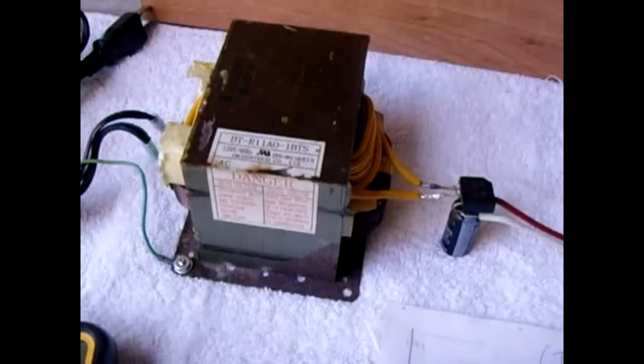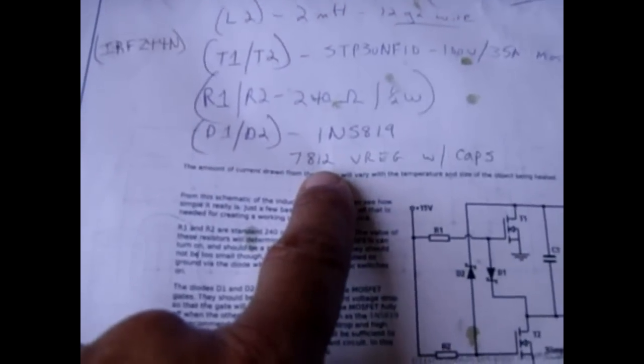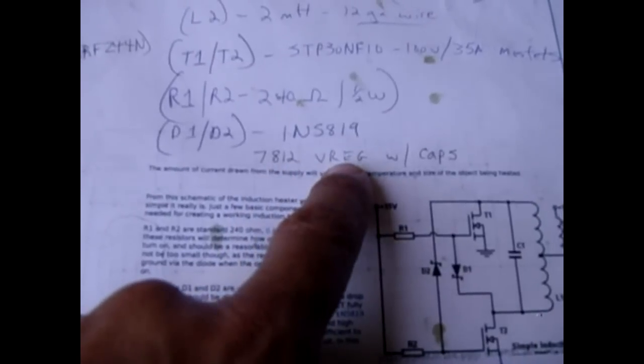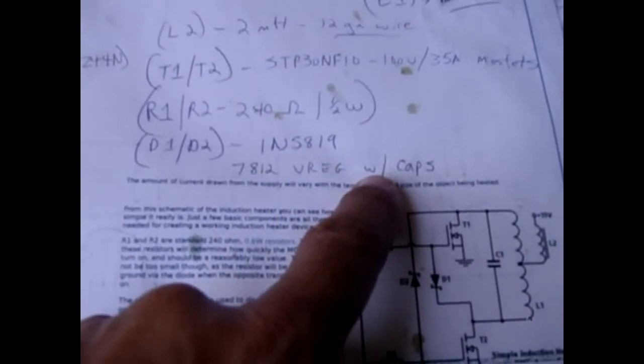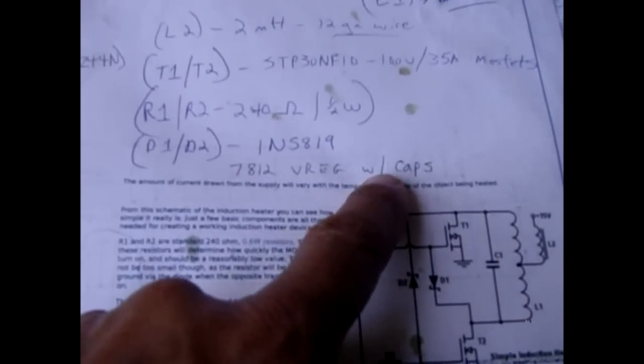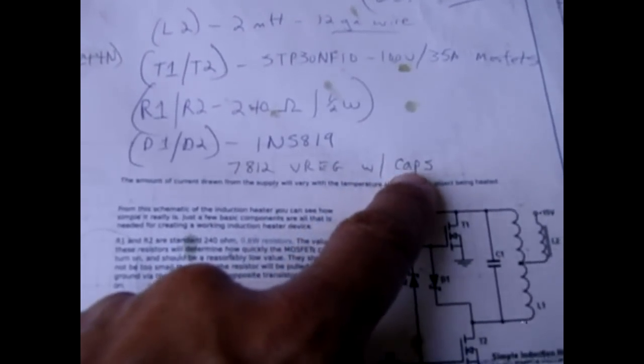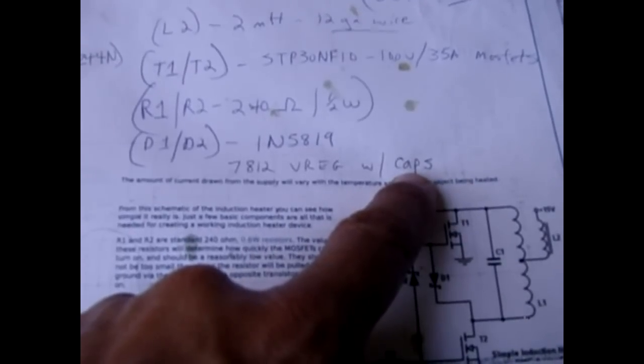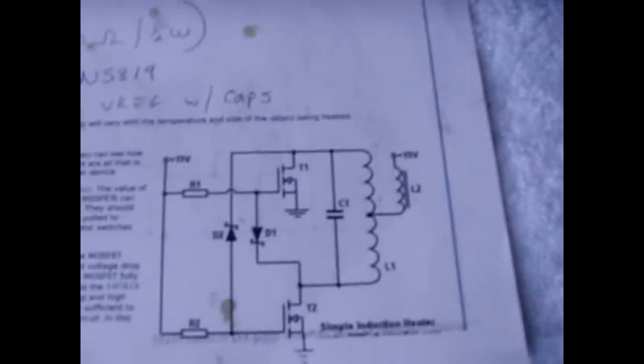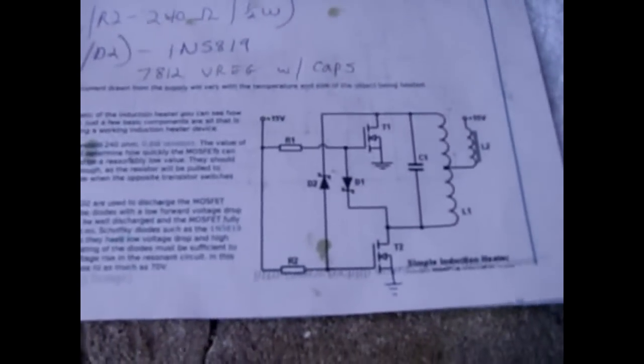And because my supply here puts out roughly 18 volts, I wanted to keep the voltage lower on the gates of the MOSFET. So I use a 7812 voltage regulator. With an electrolytic capacitor on the inside of the regulator and the out. You can use a 220 microfarad 35 volt one on the in, one on the out.